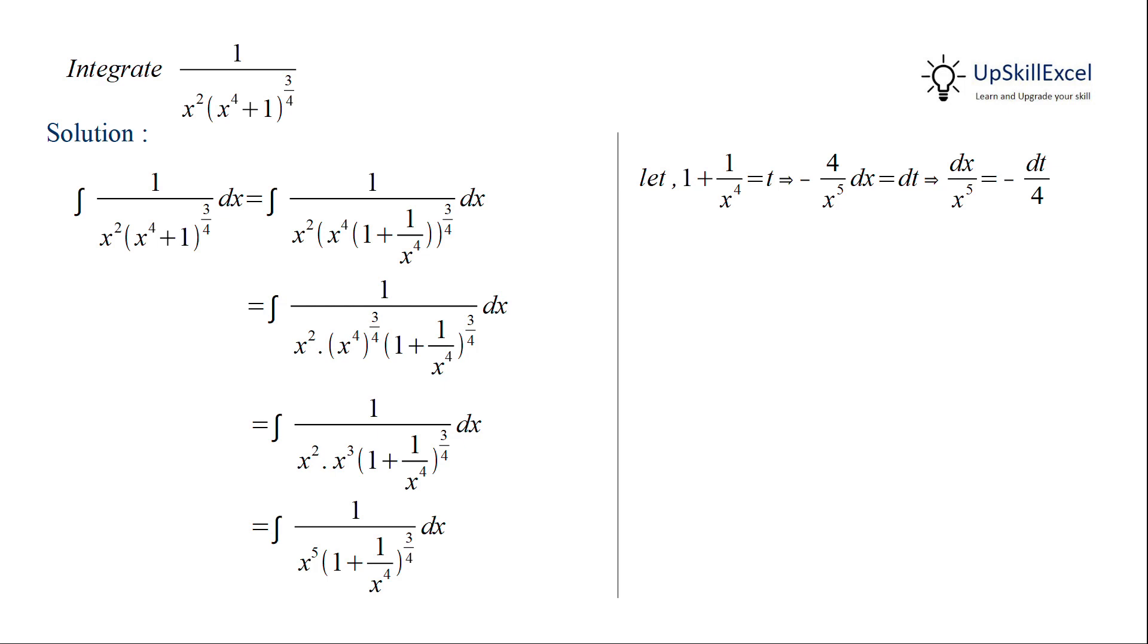We observe that x⁵ is already available in the denominator, so we can easily substitute 1 + 1/x⁴ = t.